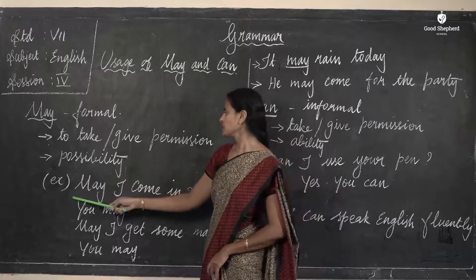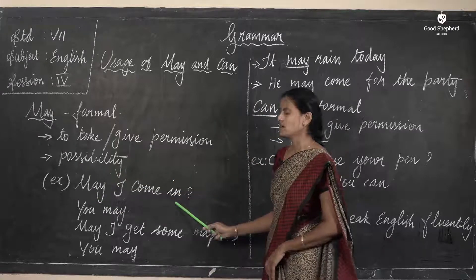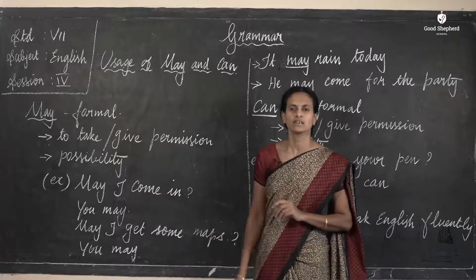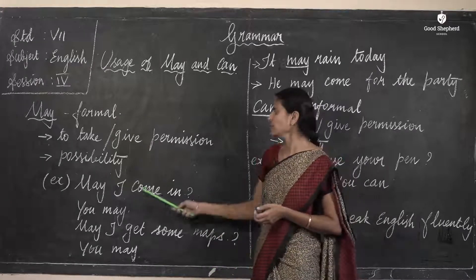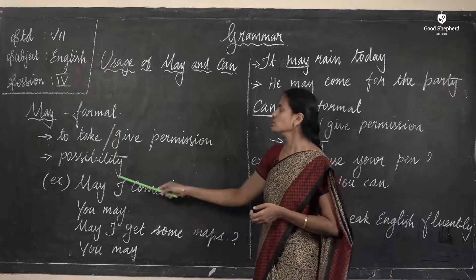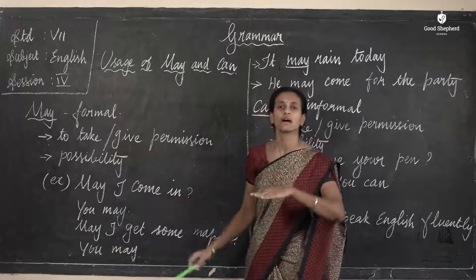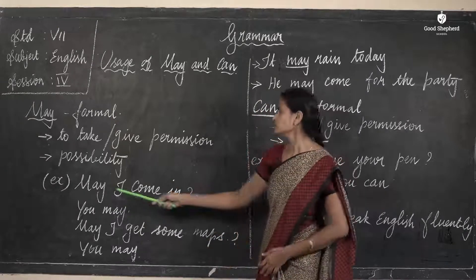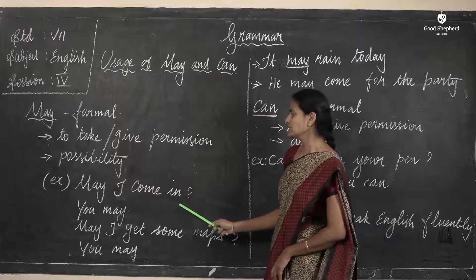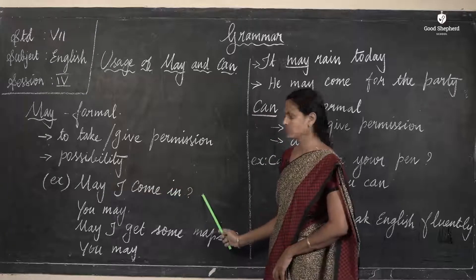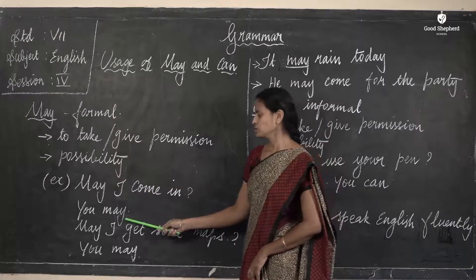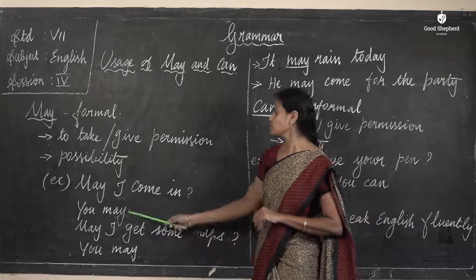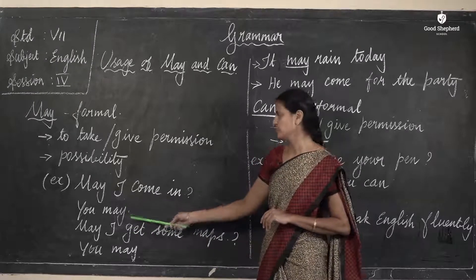For example, 'May I come in?' — often when you enter the class, you ask the teacher 'May I come in?' This is a formal situation; you are asking your teacher, so this is taking permission. The answer from your teacher would be 'Yes, you may.' — that is giving permission.